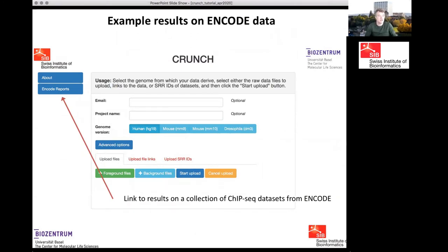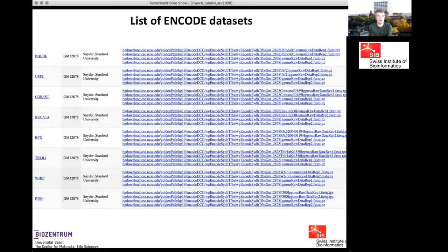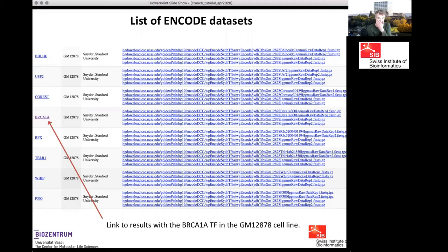You can explore CRUNCH results yourself — a large number of results on ChIP-seq datasets from the ENCODE project are available. On the start page, the ENCODE reports link gives a long list of datasets with the transcription factor name, cell line, lab, and links to raw data. As an illustration, results for BRCA1 in the GM12878 cell line from Mike Snyder's lab at Stanford are shown.